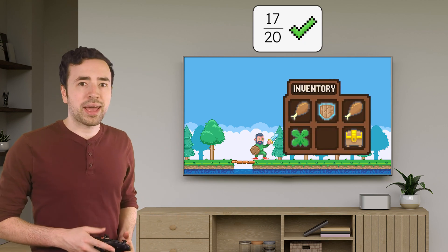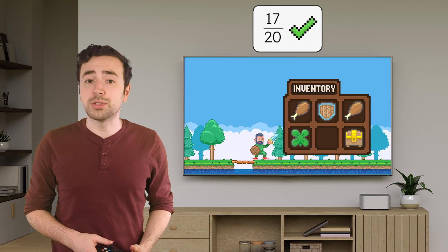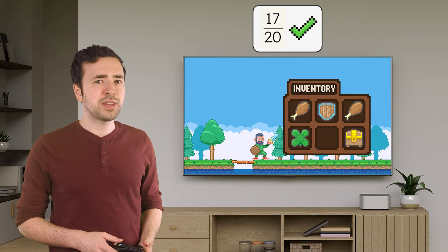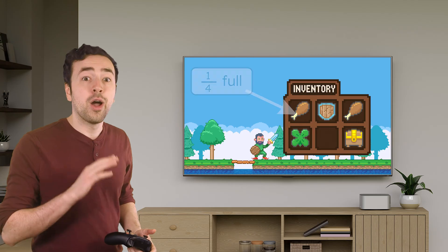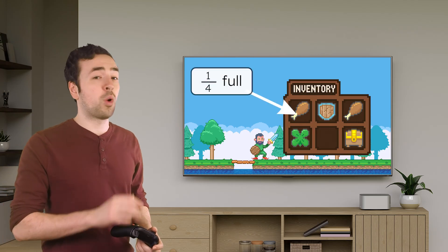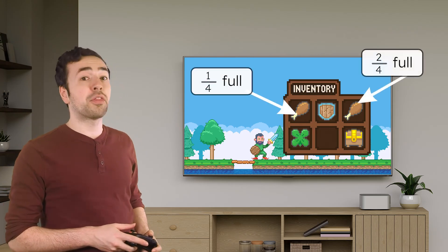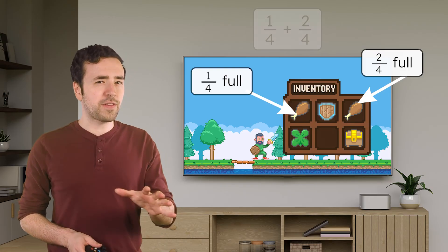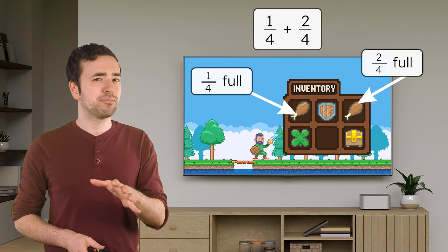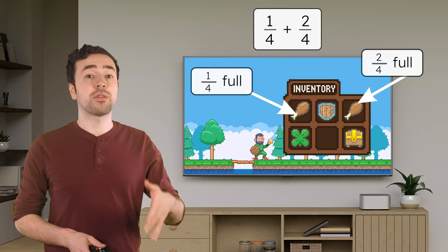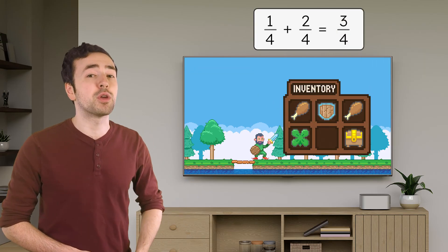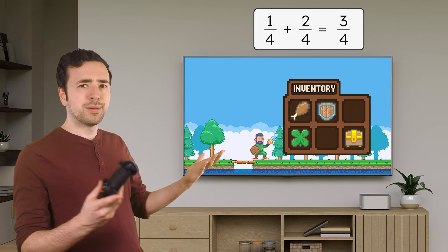I've cleared up more room in my inventory, and I have nearly a full container of luck. Check it out. One energy source is one-fourth full, and the other is two-fourths full. Do we need to find common denominators to combine them? Nope. They're both already fourths. One-fourth plus two-fourths equals three-fourths. Done!